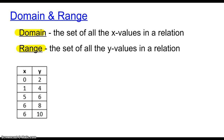The second topic in this section is called domain and range. Basically, what domain and range does is take a relation — remember, the set of ordered pairs — and split it up into two different parts: the x and the y parts.